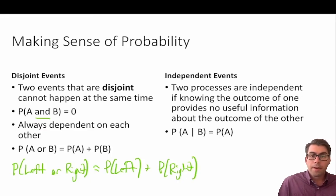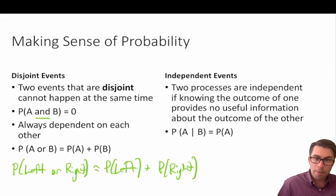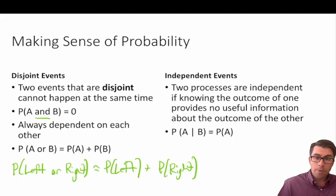When we refer to independent events, we mean two processes where the outcome of one provides no useful information about the outcome of another. In statistical language, the probability of A given B is equal to the probability of A — that vertical line meaning 'given.' So the probability of A given we know something about event B remains unchanged, meaning knowing information about B does not affect the probability of A.